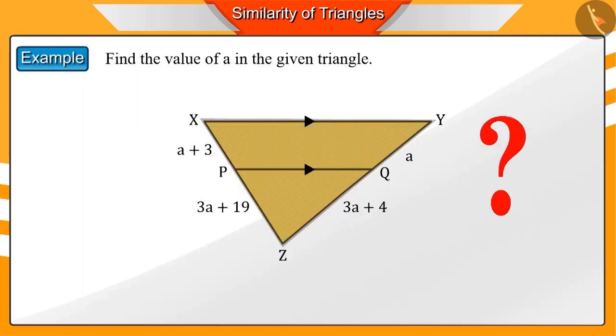How can we find the value of A? You can see that the line PQ divides the sides XZ and YZ into two parts. The arrow marks here show that lines XY and PQ are parallel lines.